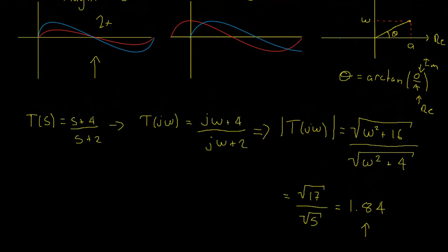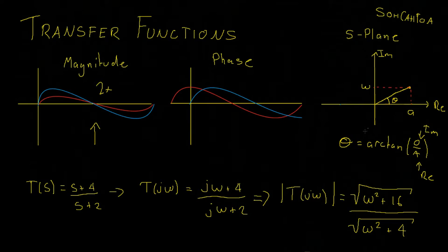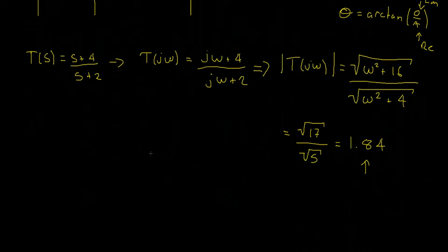Let's move on to the phase now. Remember, the phase can be thought of as the theta in our right-angled triangle. Therefore, we can take the arctan of our top term, J omega plus four.